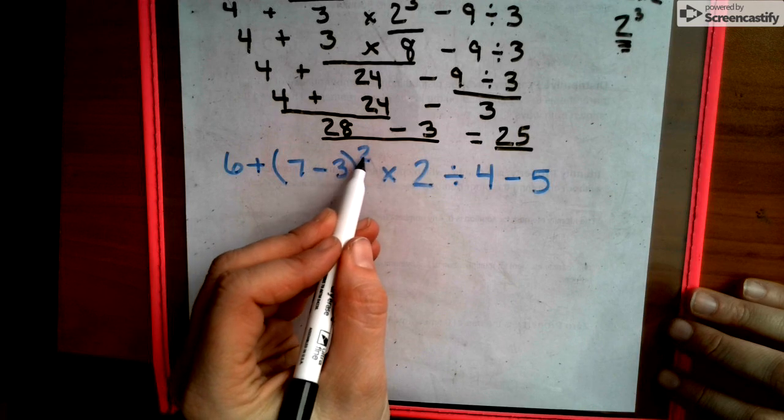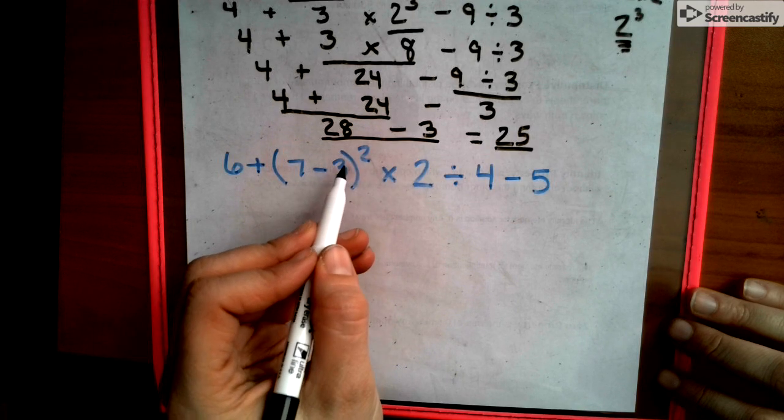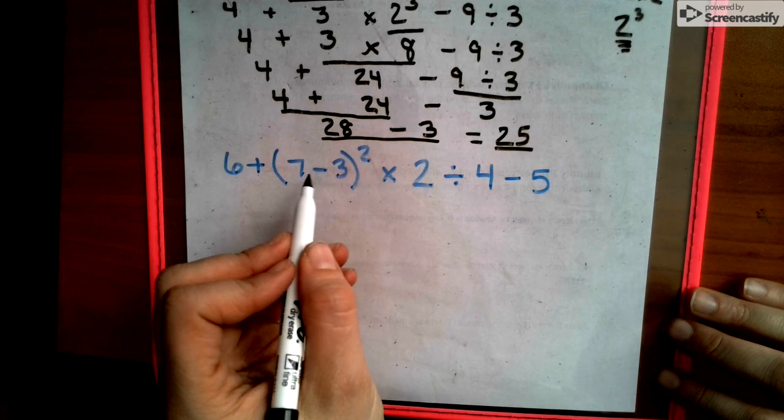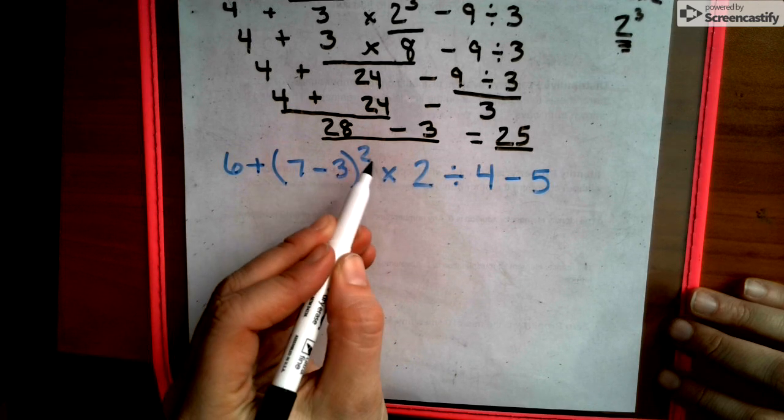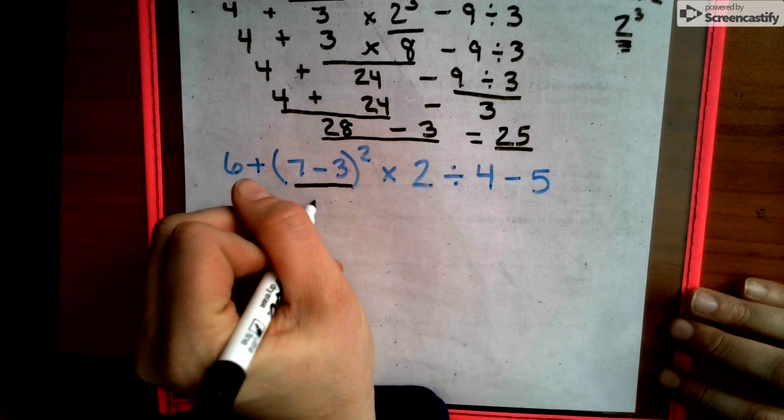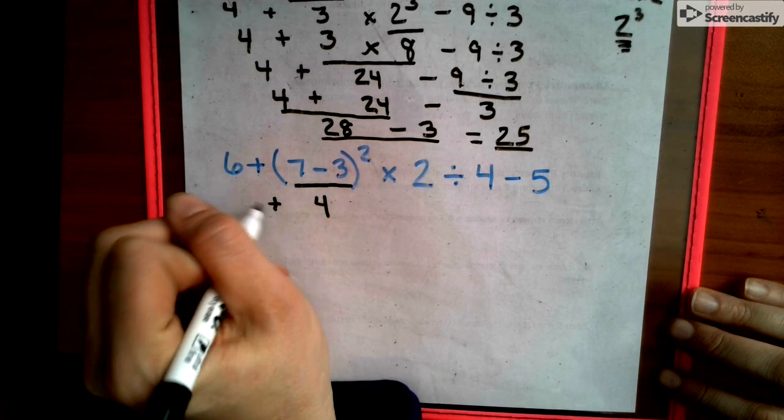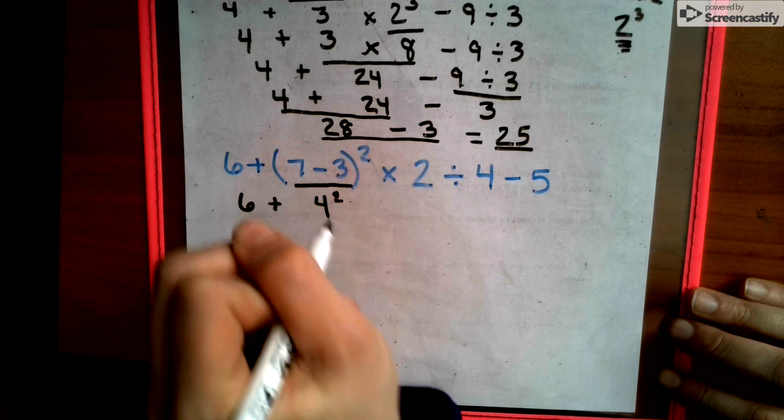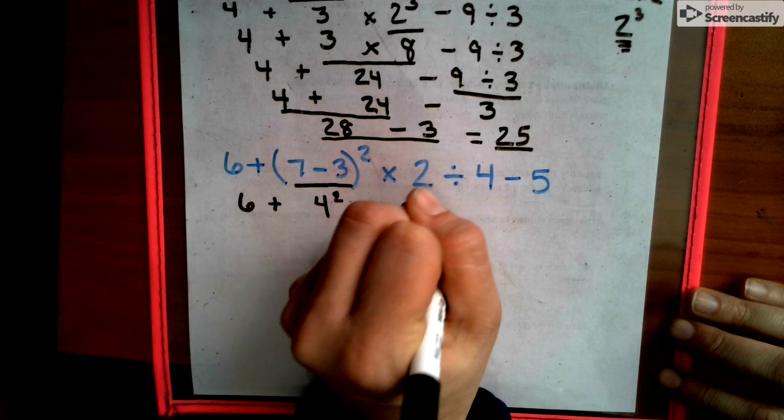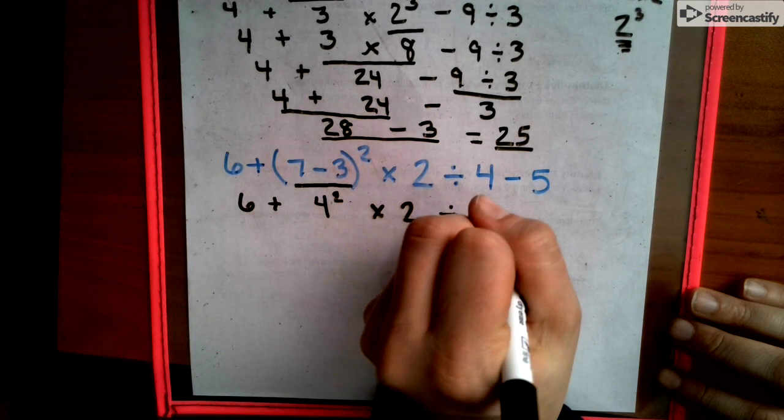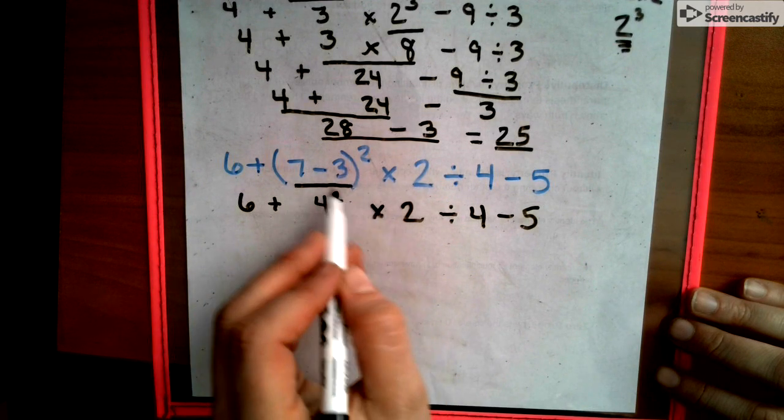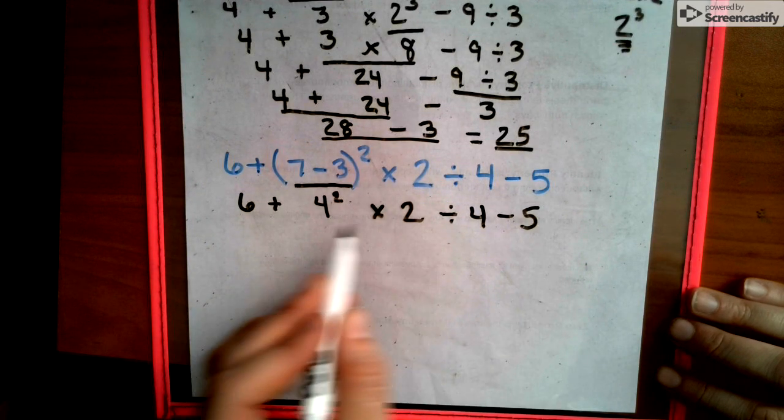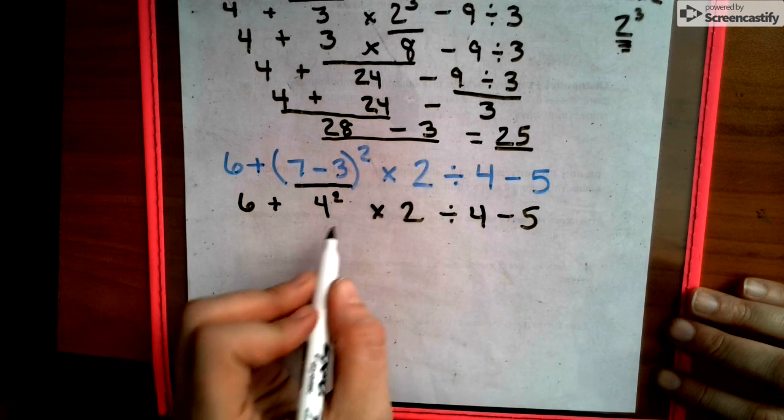Now this is a little tricky. See how this exponent is here? It's not inside the parentheses. So we have to solve this parentheses first and then raise it to the second power. So we're going to do our parentheses. We get 4. We bring everything else down we did not use. Notice how that exponent is now part of that parentheses answer. That's because it is touching the answer to the parentheses. So we ask ourselves, is there more parentheses? And there's not.